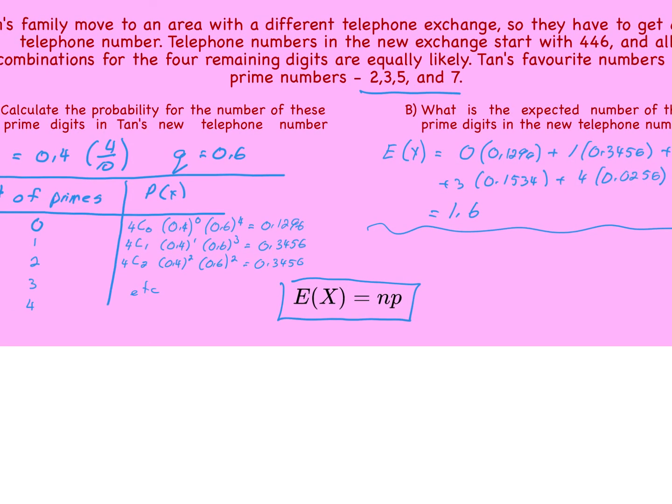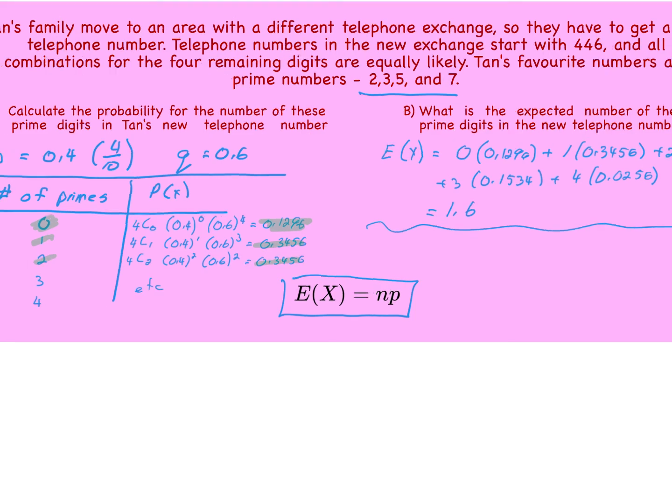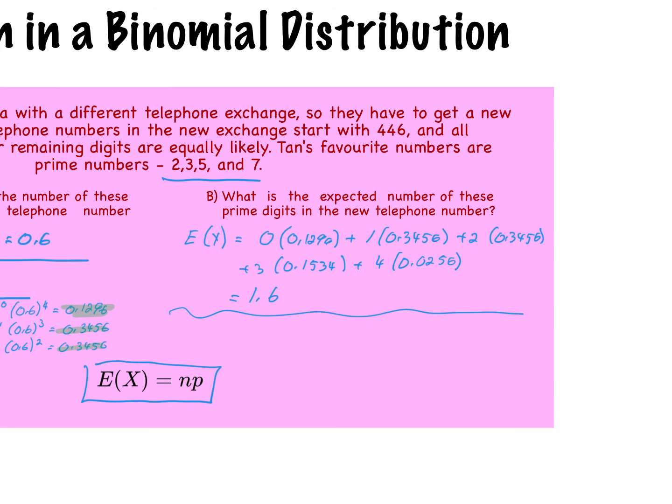So what happens is you take the number of primes multiplied by the probability and you simply add all of those up. Now, there actually is a simpler way. So we can take this formula here at the bottom of your screen and get to the same place much quicker because it's a binomial distribution.